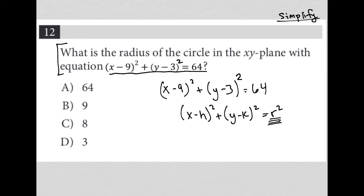that our r squared, our radius squared, is equal to 64. So I know that if r squared equals 64, then I can just square root both sides, and that would tell me that r is equal to positive 8, and that therefore the correct answer here is choice C.